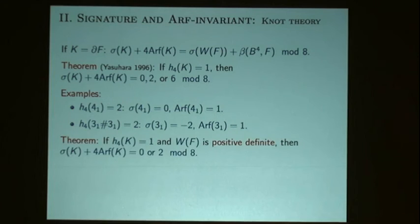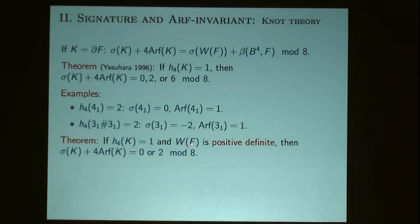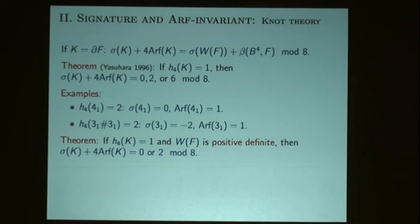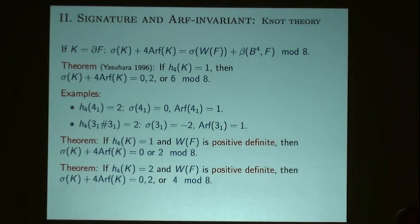To get something new, I went back to the issue of definite versus indefinite. The linking form said that some knots, if they do bound a Klein bottle, would necessarily yield a definite four-manifold. Here, the signature and the Arf invariant together can obstruct positive definite: if you're positive definite, you get zero over two. More importantly, for Klein bottles you get some constraint on the Arf invariant and the signature if the cover is positive definite.